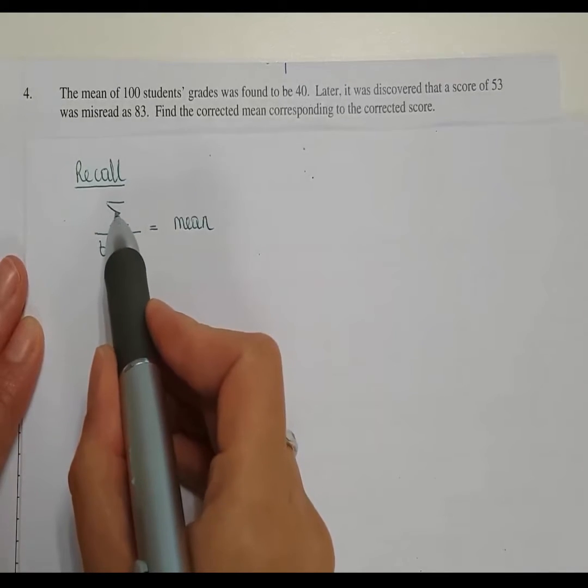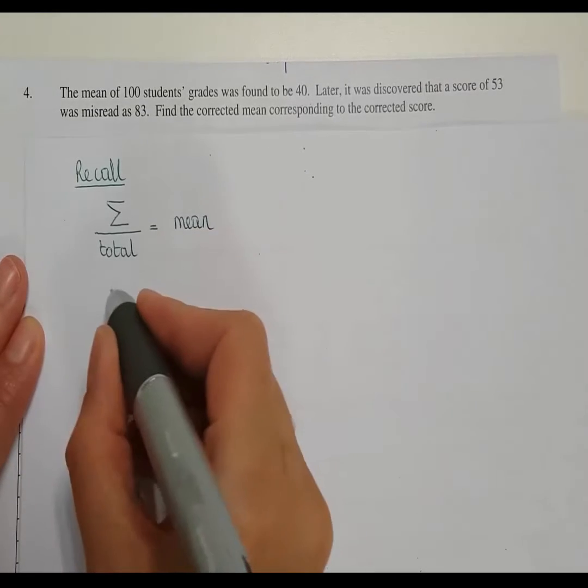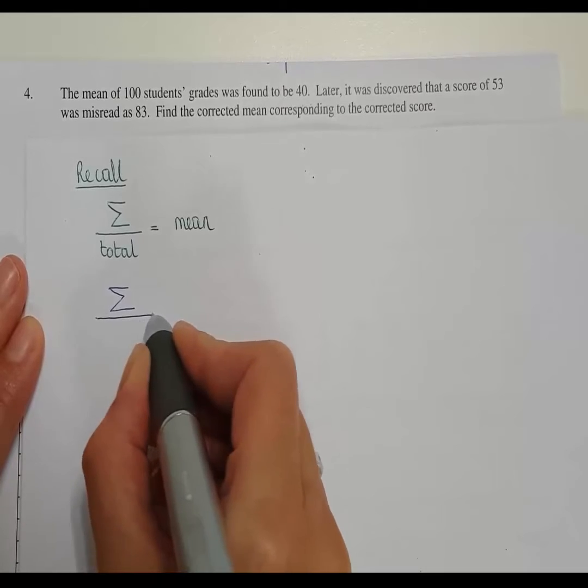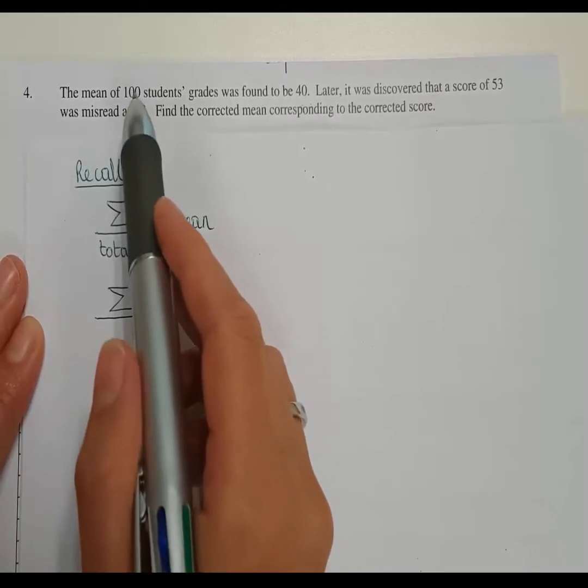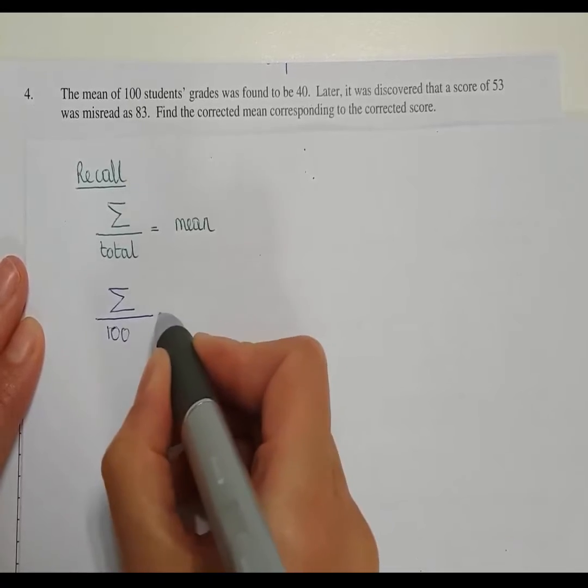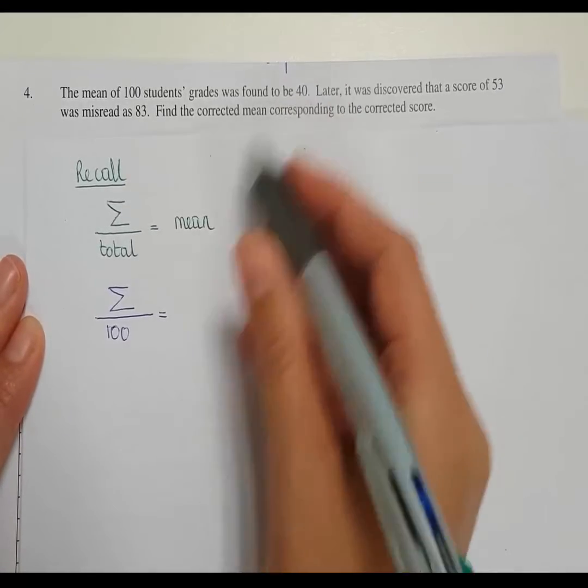So right here the sum, the sum of all the numbers, we don't know right now, but we will find what the sum is. We know the total, the total amount of students is 100. And then we also know the mean, the mean is to be 40.